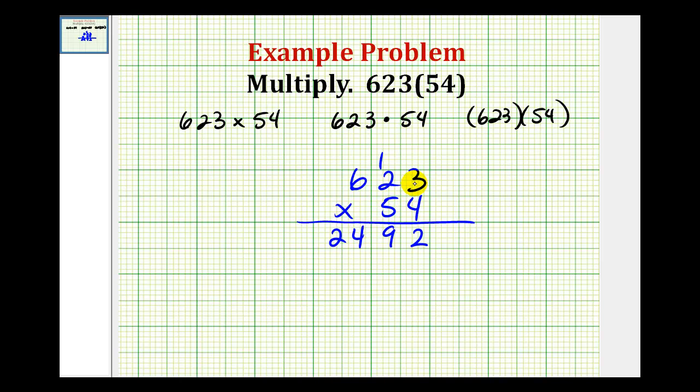Now, we're going to multiply by the 5, but we have to remember that we're really multiplying by 50. So, to accommodate for that, we have to put a 0 in the ones column. And the first digit, when we multiply, will be in the tens column.